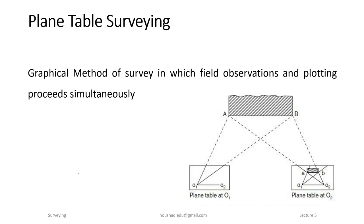Plane table surveying works as follows: if you have a figure of a building, corner A and corner B, then you have a plane table with a paper fitted on it. Those two points A and B are plotted in the field. This is how the field work is done.